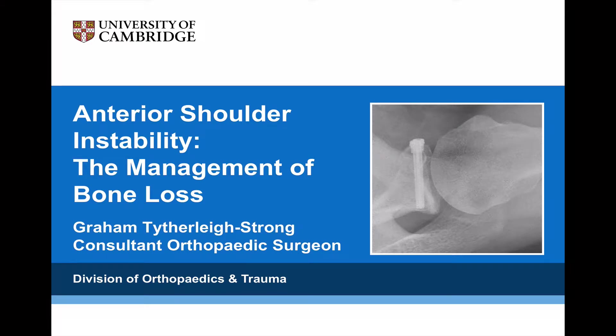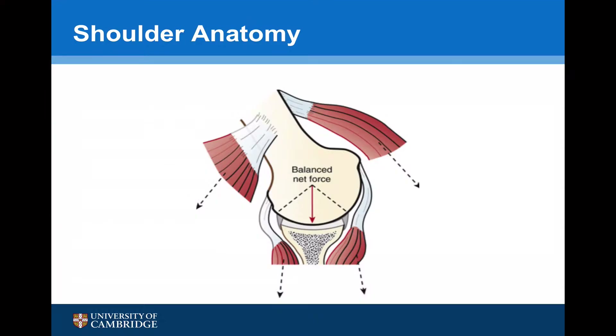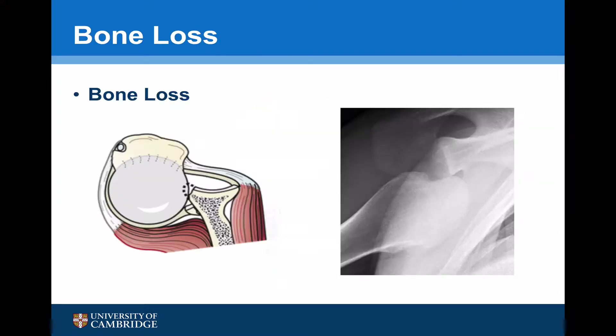Anterior shoulder instability in the management of bone loss. The shoulder is kept in joint by a complex equilibrium of forces. When the shoulder dislocates anteriorly, the anterior inferior capsule is torn, often taking off a small piece of bone known as a Bankart lesion, with the reciprocal damage to the posterior aspect of the humeral head — the Hill-Sachs lesion.